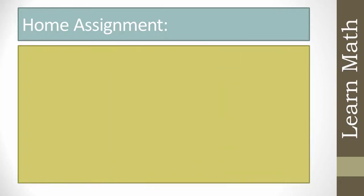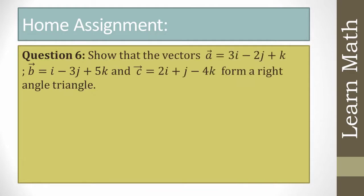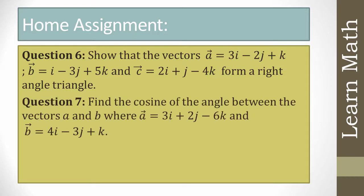Now try to solve this question yourself: show that vector a = 3i - 2j + k, vector b = i - 3j + 5k, and vector c = 2i + j - 4k form a right angle triangle.